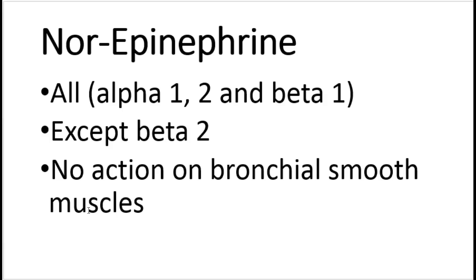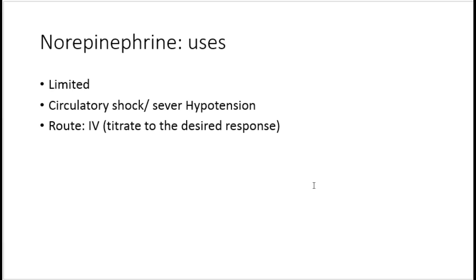Let's move on to norepinephrine. Norepinephrine is a major neurotransmitter secreted at various sites in the adrenergic system. It has action on all adrenergic receptors except beta 2. Because it lacks beta 2 action, it has no effect on bronchial smooth muscles. The key cardiovascular difference from epinephrine is that norepinephrine does not decrease blood pressure, unlike epinephrine which at low dose reduces blood pressure via beta 2 action.